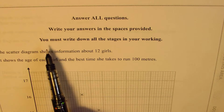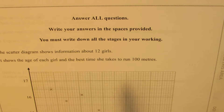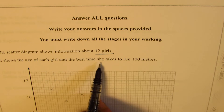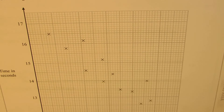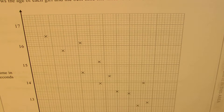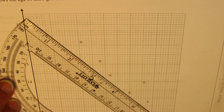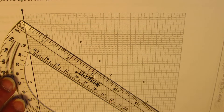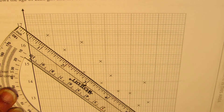The very first question: answer all questions, write your answers in the space provided, and you must write down all the stages in your working. The scatter diagram shows information about 12 girls — it shows the age of each girl and the best time she takes to run 100 meters. We need to draw a line of best fit. The idea is to have the same number of points on either side of the line.